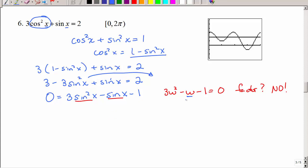So that means I'm going to have to use the quadratic formula again, and what does my w stand for? The sine of x. Now my a, b, and c, so a is 3, b is negative 1, and c is negative 1. So remember, it's negative b plus or minus the square root, b squared minus 4ac, all divided by 2a.